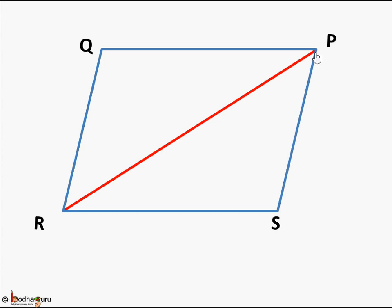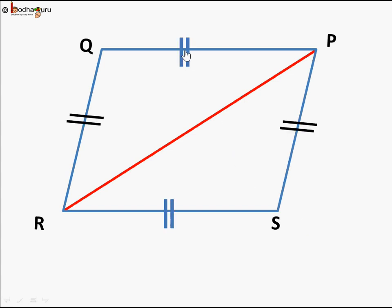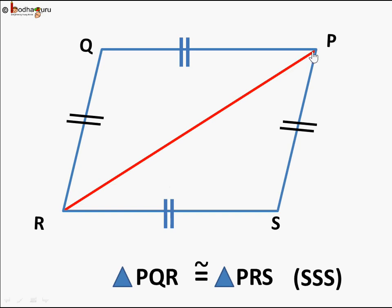We draw a diagonal PR. There can be another diagonal QS also. We know side PQ is equal to side RS. Opposite sides of a parallelogram are equal; same way QR is equal to PS, and the side PR is common.